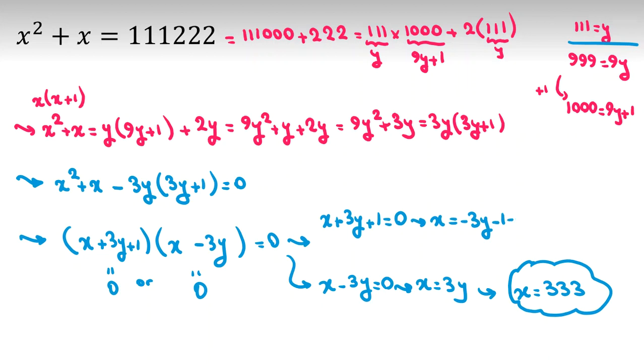The next one, x is negative 3y minus 1. So because y is 111, negative 3 times 111 minus 1, negative 333, so x will be negative 334. This is our second answer.